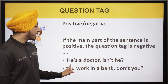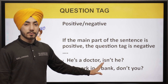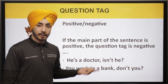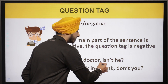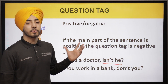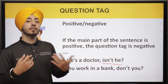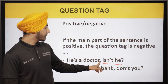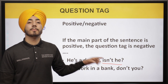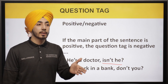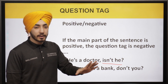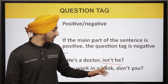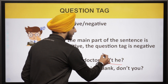For example, 'He is a doctor' — this is a positive sentence, so we have to say 'isn't he?' That is our question tag. This is a part of spoken English, used to continue a conversation. So we say: 'He is a doctor, isn't he?' — 'isn't' being formed from 'is not'.